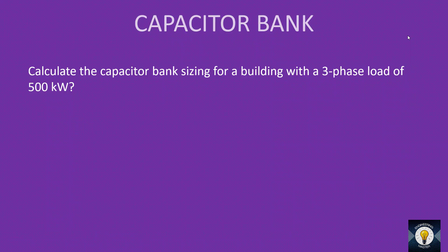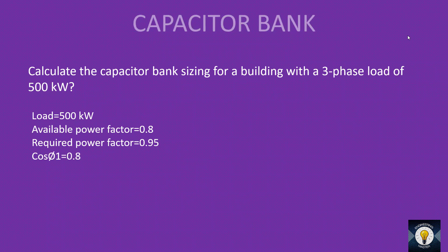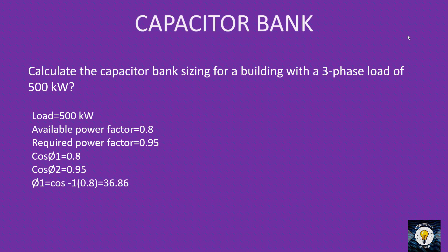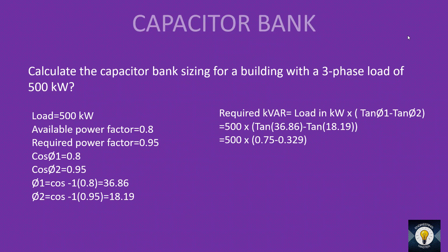Let us solve one more problem. Calculate the capacitor bank sizing for a building with a three-phase load of 500 kilowatt. Available power factor is 0.8, required power factor is 0.95. φ1 = cos⁻¹(0.8) = 36.86°, φ2 = cos⁻¹(0.95) = 18.19°. Required kVAR = 500 × (tan 36.86° − tan 18.19°) = 500 × (0.75 − 0.329) = 210.65 kVAR.